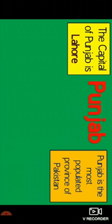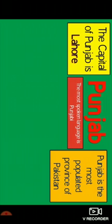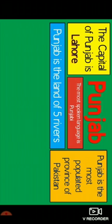As we discussed earlier, Pakistan has four provinces: Punjab, Sindh, Balochistan, and Khyber Pakhtunkhwa. Let's talk about our provinces. Here comes Punjab. The capital of Punjab is Lahore. Punjab is the most populous province of Pakistan. The most spoken language is Punjabi. Punjab is also known as the land of five rivers.